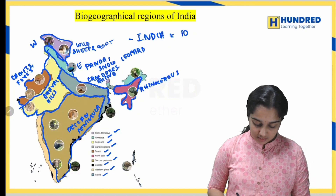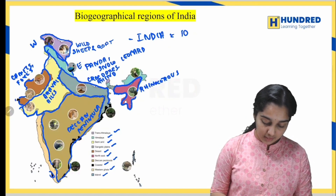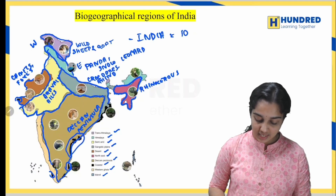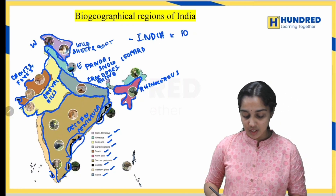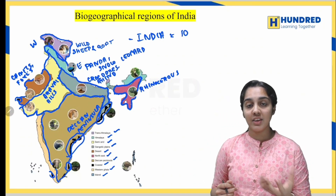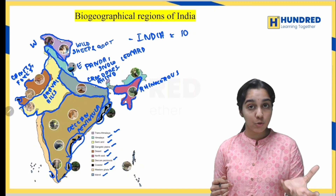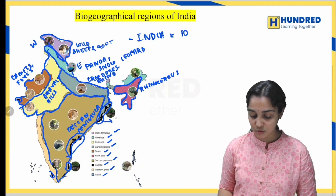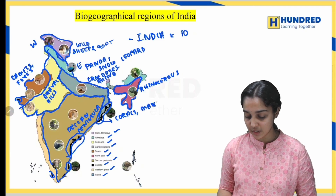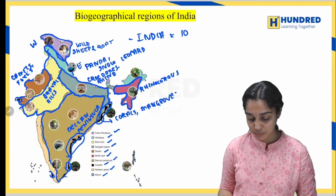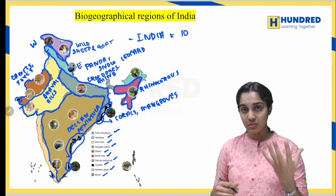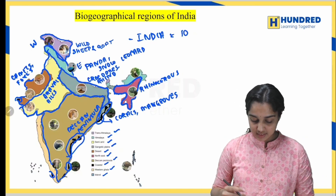Next are the coastal areas, shown in black on the map. The coastal areas have sandy beaches. The species present here include corals and mangroves — various mangrove species are present in the coastal areas, depending upon climatic conditions and soil conditions.